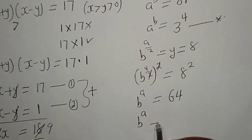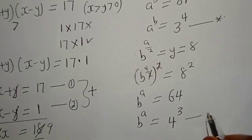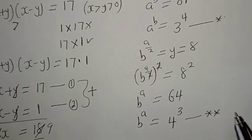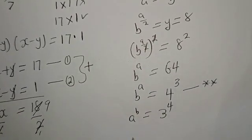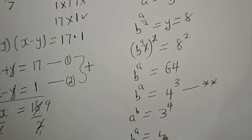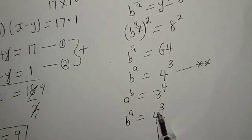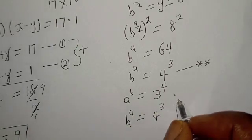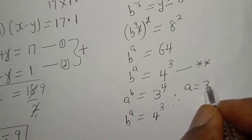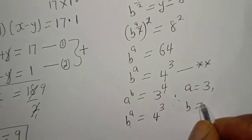Now, B raised to power A equals 64 equals 4 raised to power 3. Comparing the two equations — A raised to power B equals 81 and B raised to power A equals 4 raised to power 3 — we see the base B equals 4 and the exponent A equals 3. Therefore, A equals 3 and B equals 4.